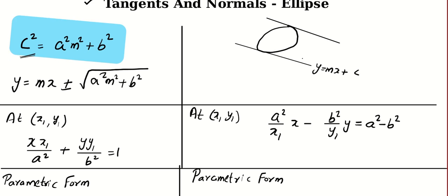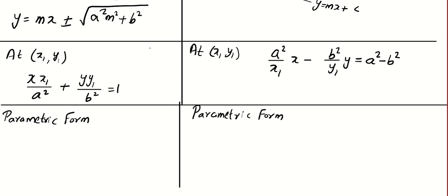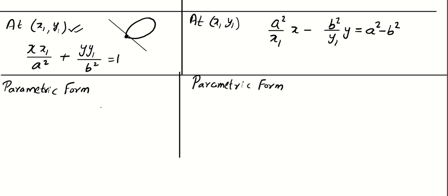The second formula is even more important. This is the equation of a tangent at point (x1, y1) where x1 y1 is a point on the ellipse. If you know these two formulae, you can derive the third formula very easily without memorizing it.